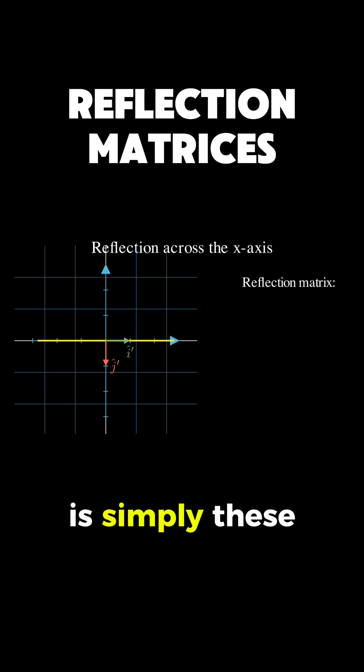The reflection matrix is simply these two column vectors: 1 and 0 for where i lands and 0 and negative 1 for where j lands, giving us the matrix with 1 and 0 in the first row and 0 and negative 1 in the second row.